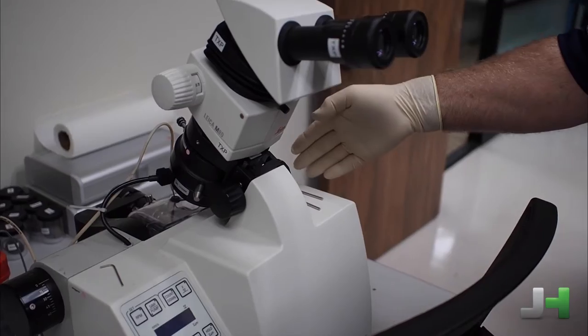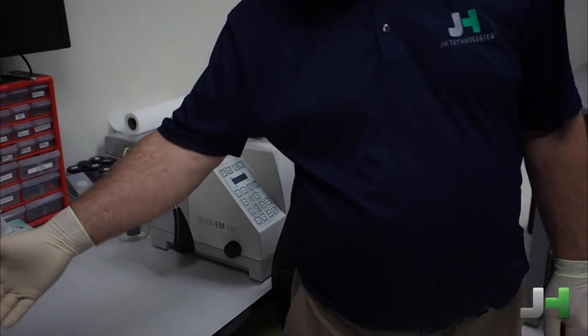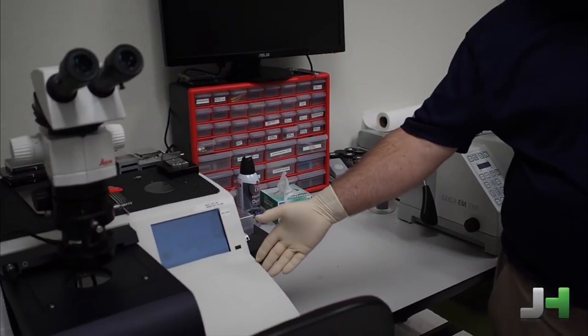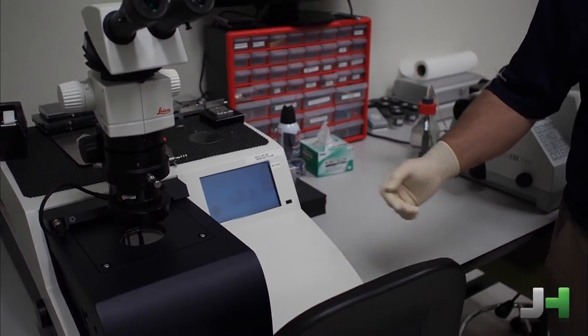And then once we've got down to the levels that we want, we can take it to the ion mill. This is a Leica EM3 TX for final polishing and preparation prior to going into the SEM.